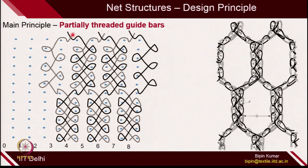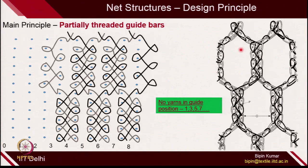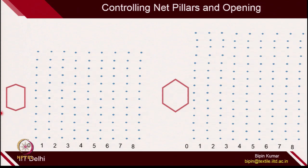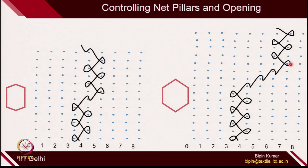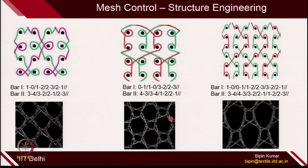Overlap and underlap are very, very important, because the way you play with different overlaps and underlaps, you create different pillar designs and different shapes of the mesh. Net pillars and openings are the 2 key things. If you really want to change the shape of a mesh, you can change the shifting — for example, after making pillars it is shifting to the third column, or here it is shifting to the fifth column. This is how you can change the shape of the mesh.